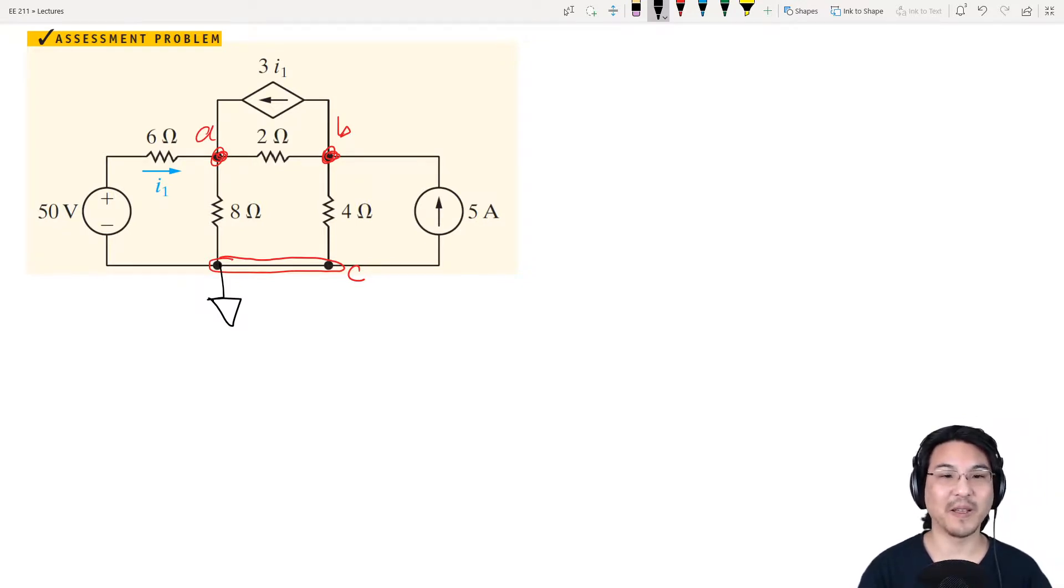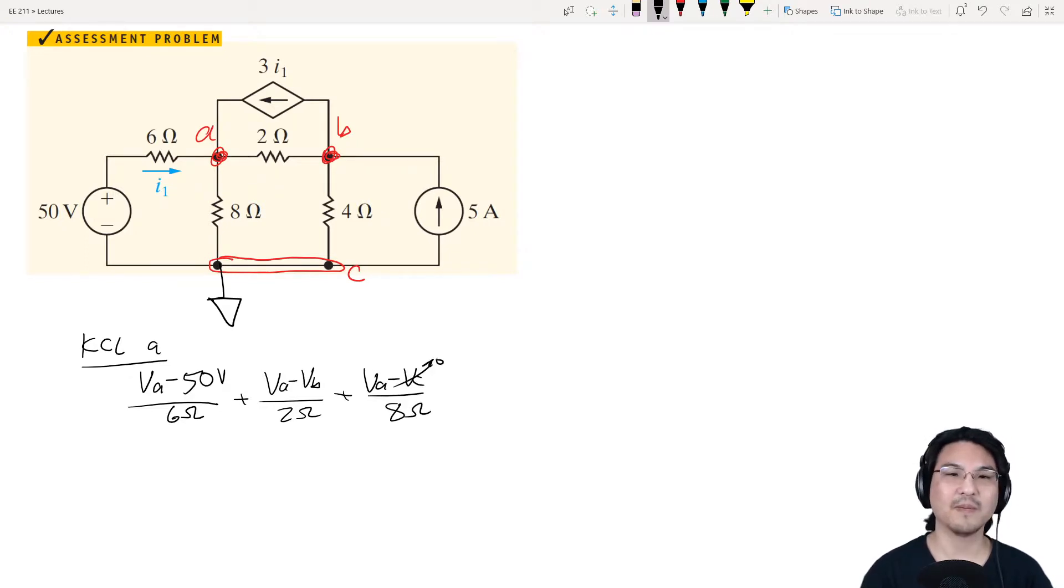So let's write KCL for node A. I'll go out. So for this one, VA minus whatever the voltage is here, which is 50 more than it is here. And right here is my reference, so that's zero. So the voltage here is 50. So VA minus 50 over 6. Now let's go this way: VA minus VB over 2. Let's go this way, going down: VA minus VC over 8. VC is zero. Now let's go this way. So if going out is positive, this is going in the node, so that's negative. What is this current? This. So that's KCL for node A.